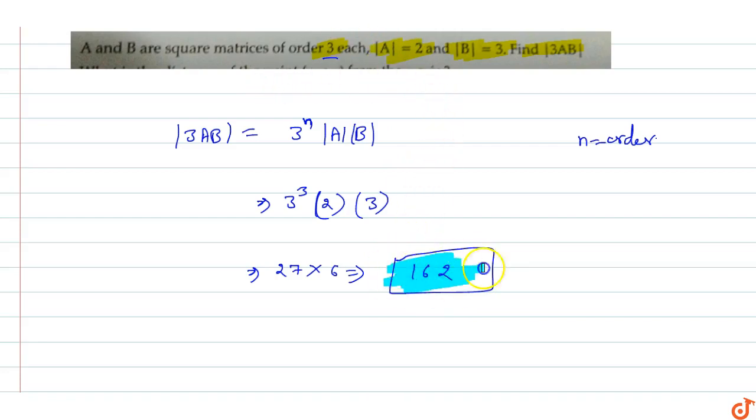162. This is the answer for this question. The determinant value of 3AB equals 162.